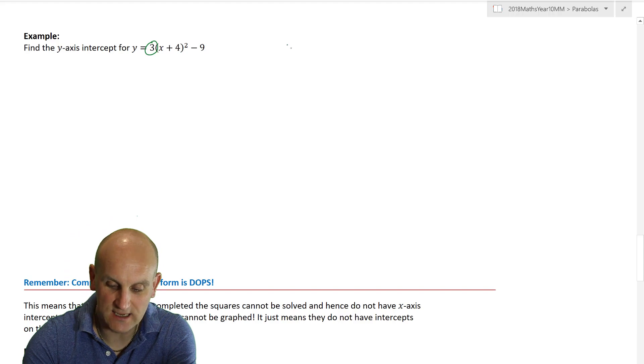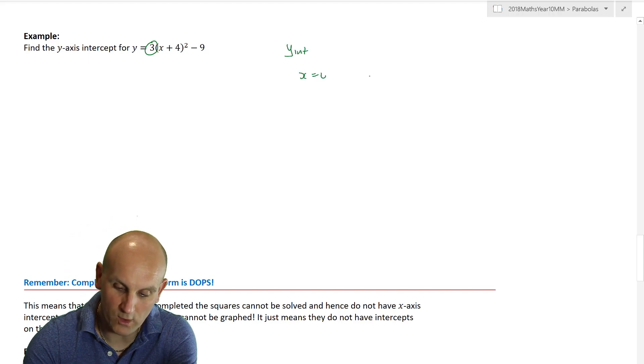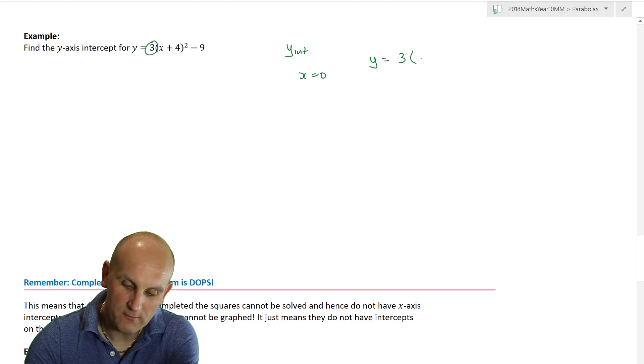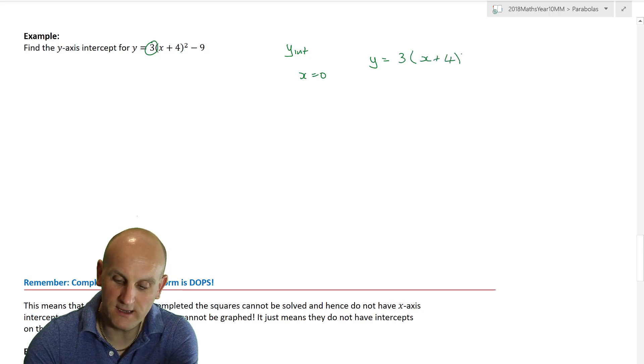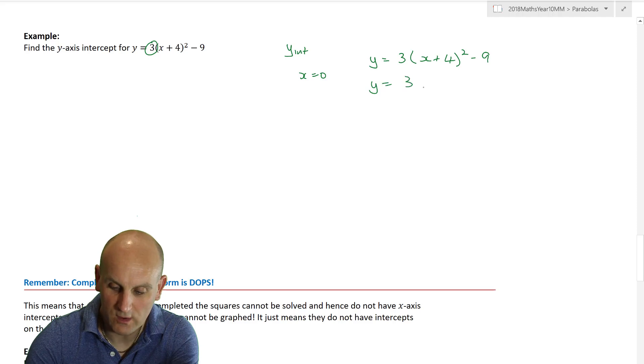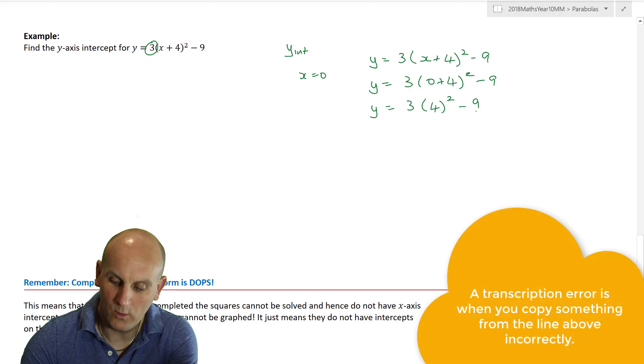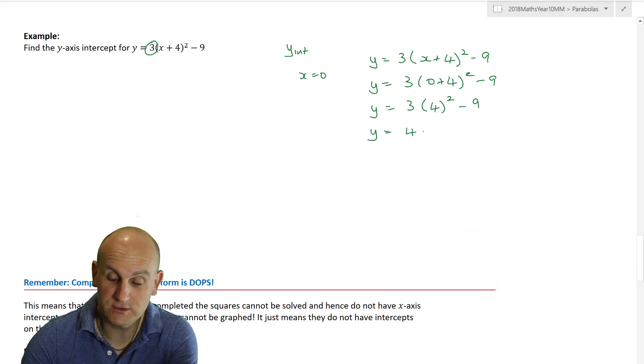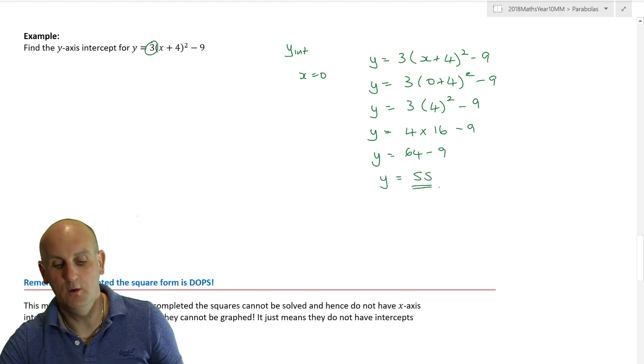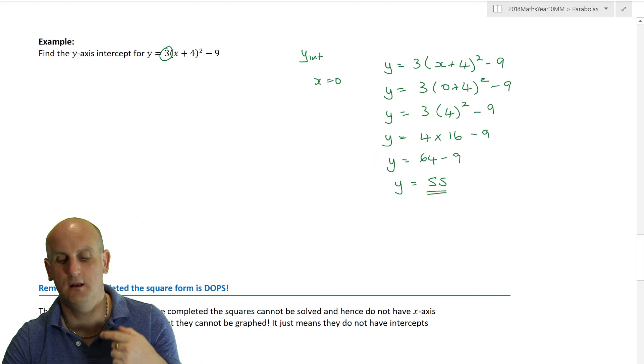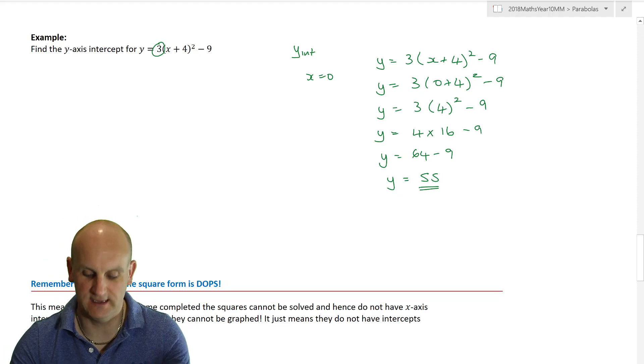If I want to find my y-axis intercept, I'm going to put x is equal to 0. So, y is equal to 3 lots of x plus 4 squared minus 9. So, y is equal to 3 times 0 plus 4 squared minus 9. I have to do brackets first, so that becomes all 4 squared. Nearly put a plus there. That's going to be a transcription error, but thankfully, it wasn't. Y is equal to 4 lots of... Well, 4 squared is 16 minus 9. So, 4 16s are 64. And so, that gives me 55 as my answer. That's a lot, lot easier, he says, theoretically speaking-ish.